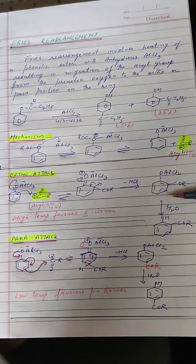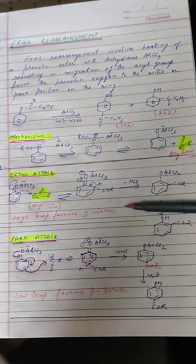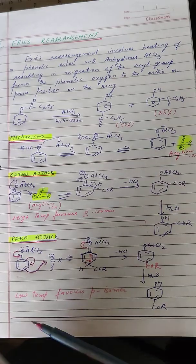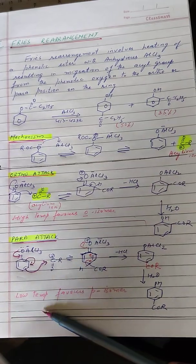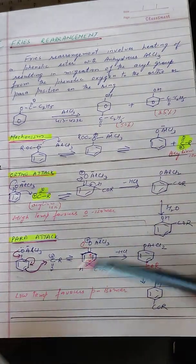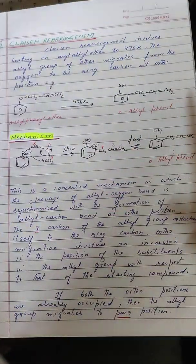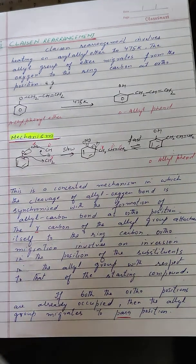High temperature favors the ortho isomer, whereas low temperature favors the para isomer, as you can see in this particular case.